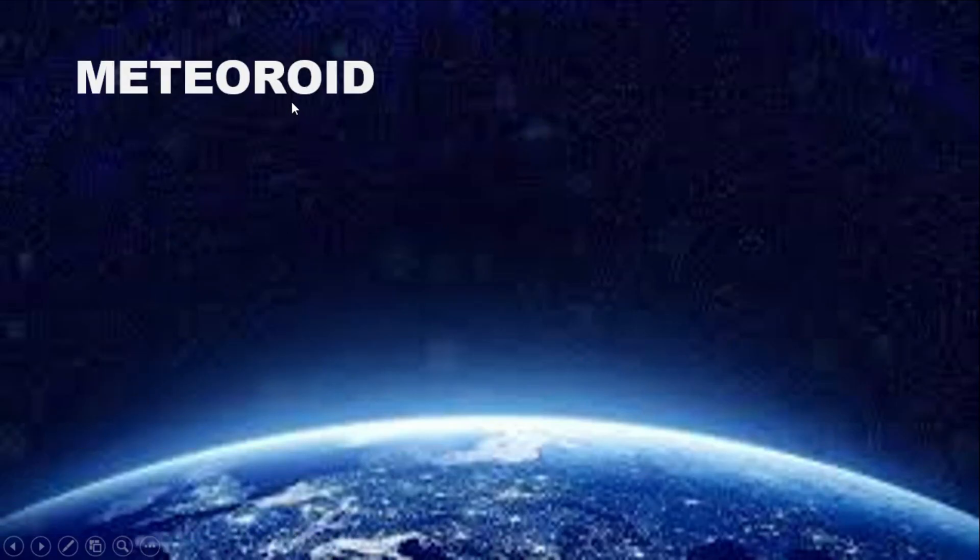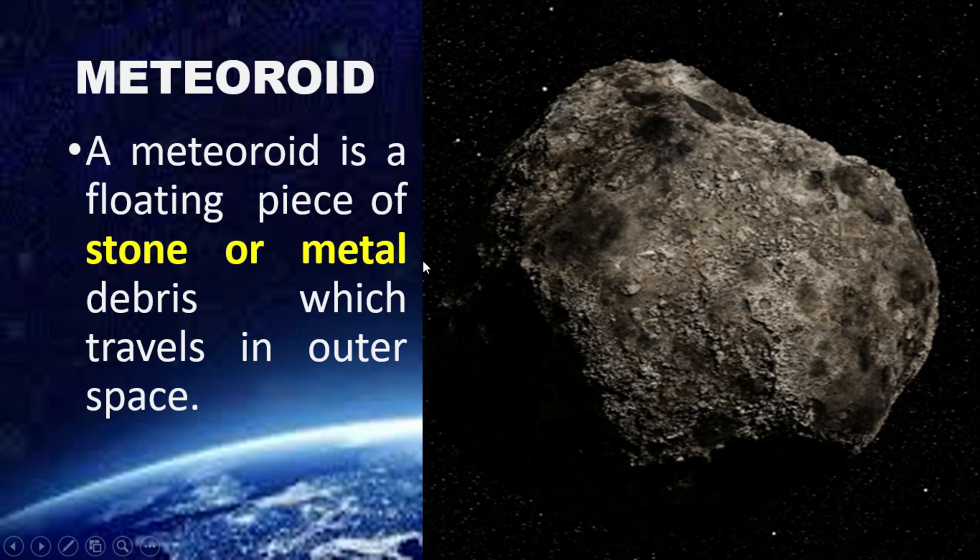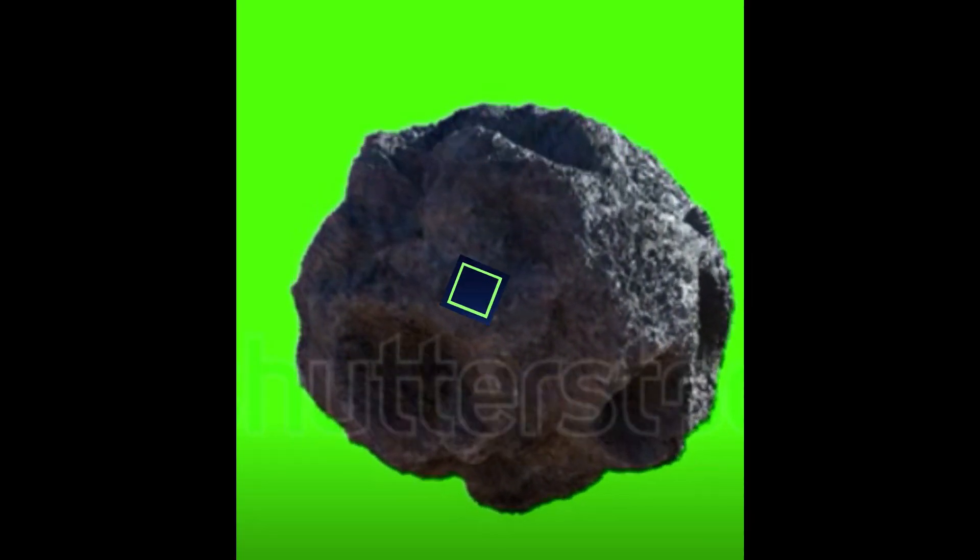What is a meteoroid? A meteoroid is a floating piece of stone or metal debris which travels in outer space. This is the diagram of a meteoroid. Next is the animation for the meteoroid.